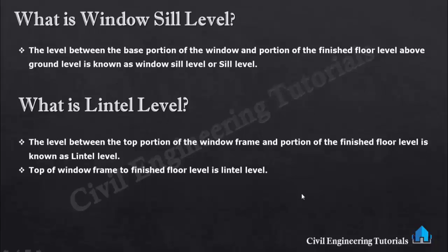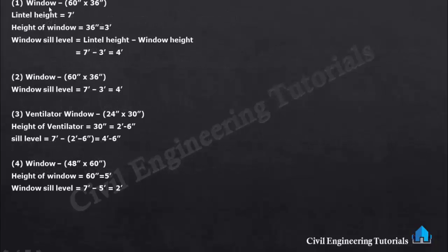Now let's start the calculation. This window has a size of 60 inch × 36 inch and lintel height is 7 feet. Height of window is 36 inch, which means 3 feet (36 divided by 12 = 3 feet). The windowsill level formula is: lintel height minus window height. So 7 feet minus 3 feet — windowsill level is 4 feet. Here on this window, windowsill level should be 4 feet.